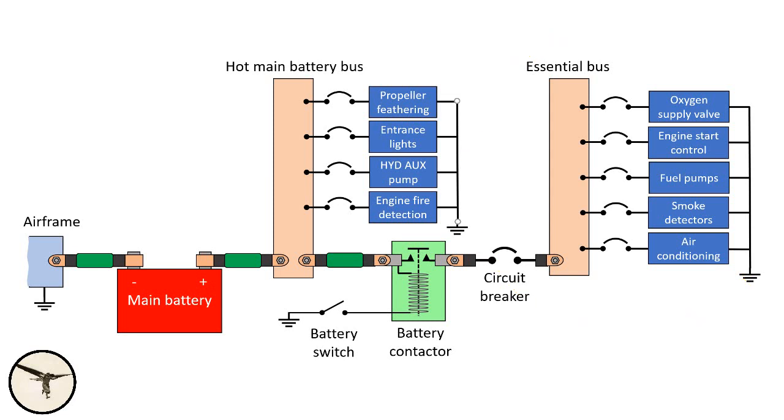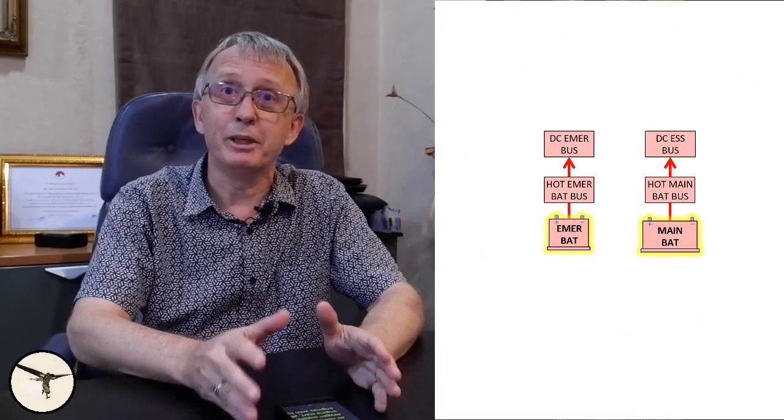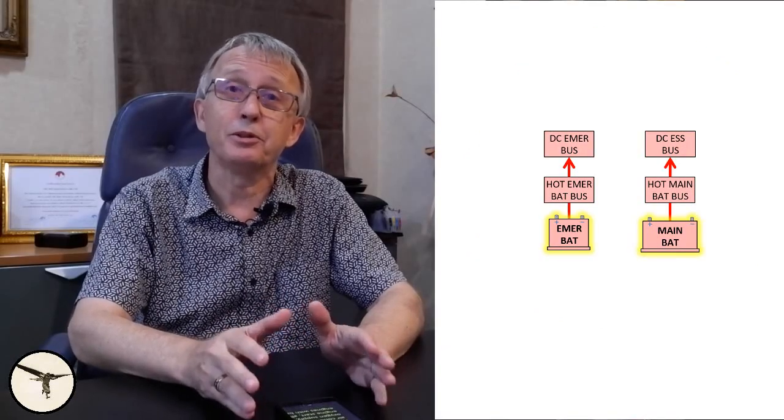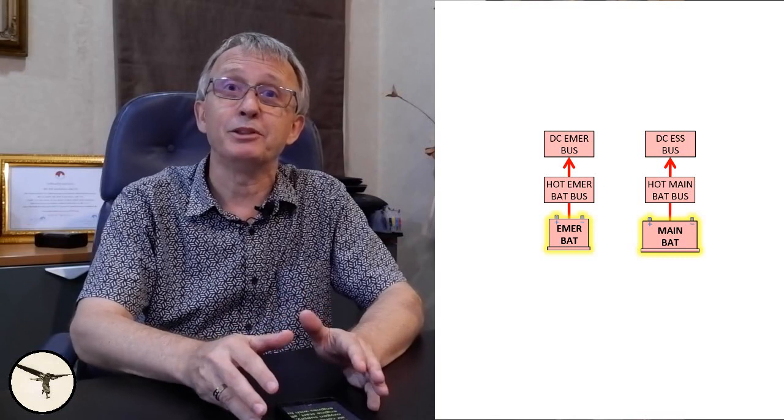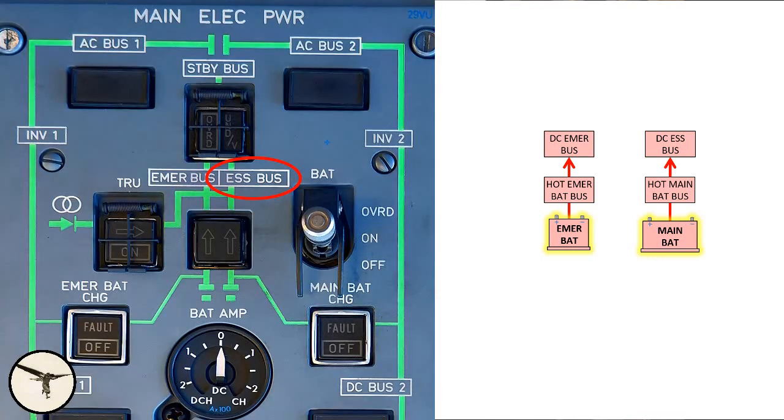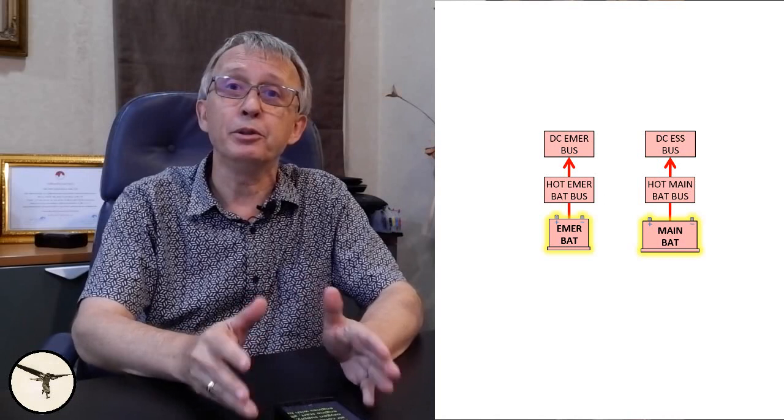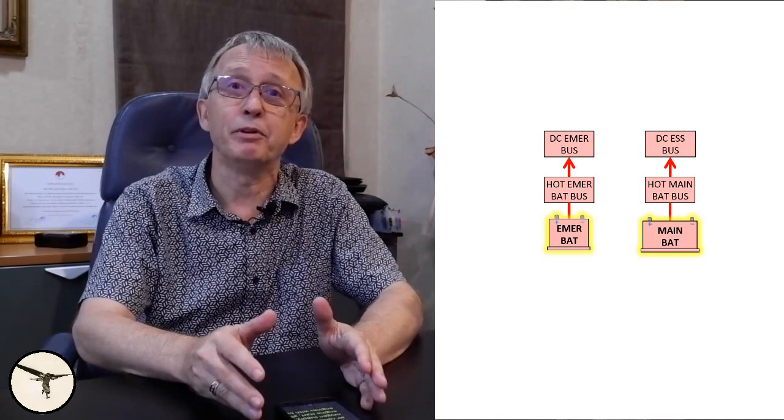Now let's have a look at the complete systems. We start with the batteries. They are 24 volt. The main battery to the right powers the hot main battery bus and the DC essential bus. Some systems powered by the essential bus are air conditioning, smoke detectors, oxygen supply, fuel pumps, and engine start, allowing you to start engines with battery power alone.